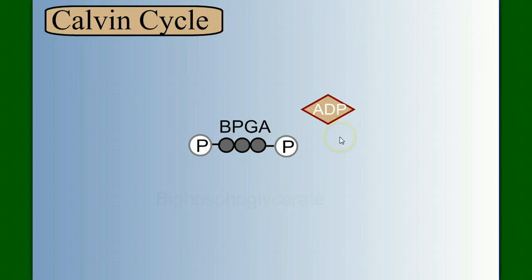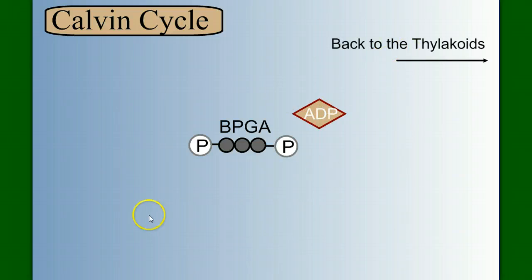ADP used to be ATP, adenosine diphosphate, adenosine triphosphate. Here's the other phosphate group. So watch what happens again. A PGA becomes a BPGA, or biphosphoglycerate. The ADP can go back to the thylakoid to be used again in the light reactions.